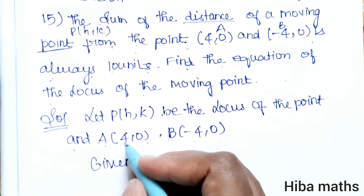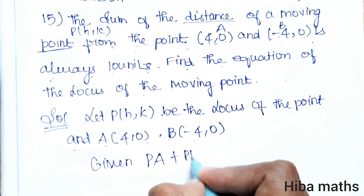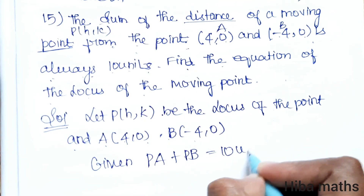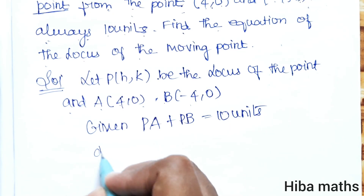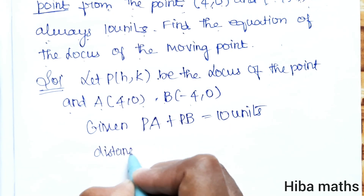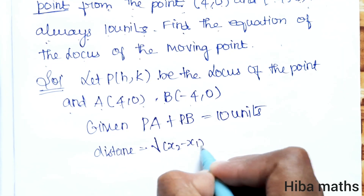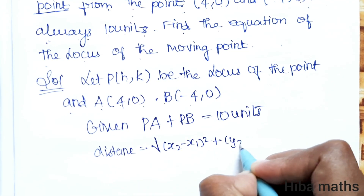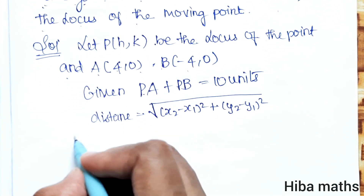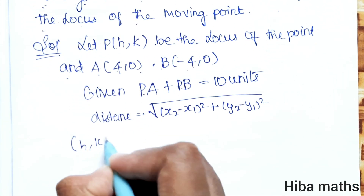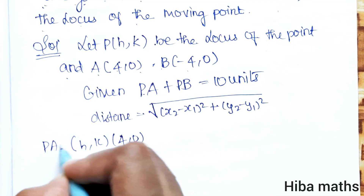Let A be (4,0) and B be (-4,0). We have PA + PB = 10 units. Using the distance formula: root of (x2 minus x1) whole square plus (y2 minus y1) whole square. The first point is P(h,k) and A is (4,0).